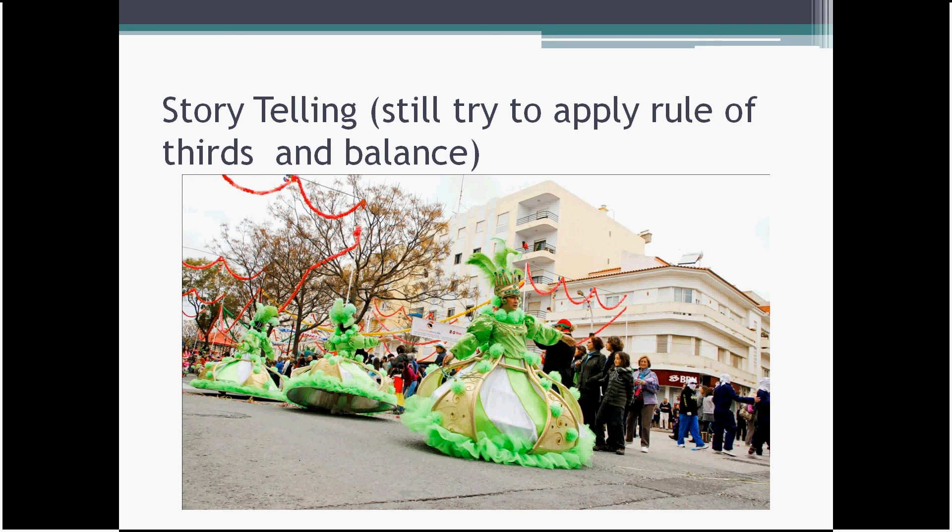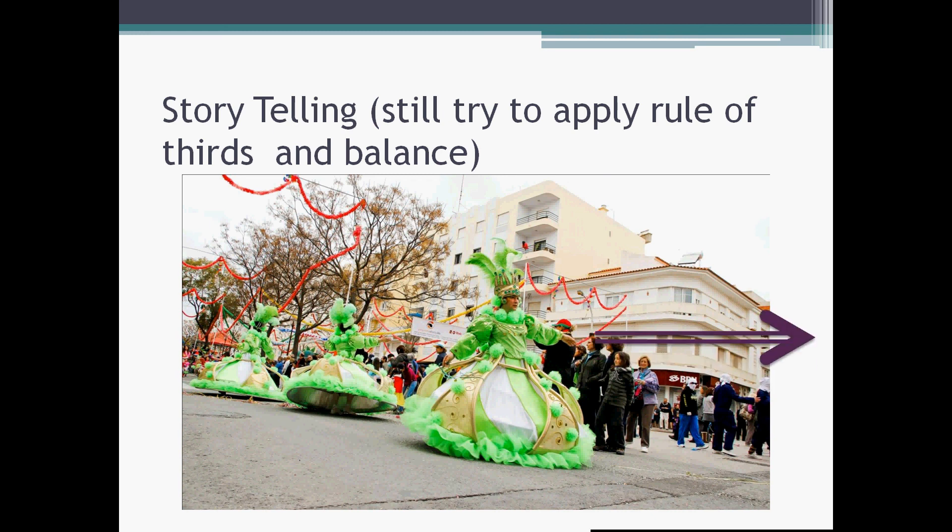So following the rules can still help with elegantly telling the story. In this picture, you see the story of dancers in a carnival. And the dancers are coming from left to the right, so I give some space to the right. To have a balanced picture, also I include the people, the buildings. But usually in telling the stories, the telling the story itself is more important than the photography rules.